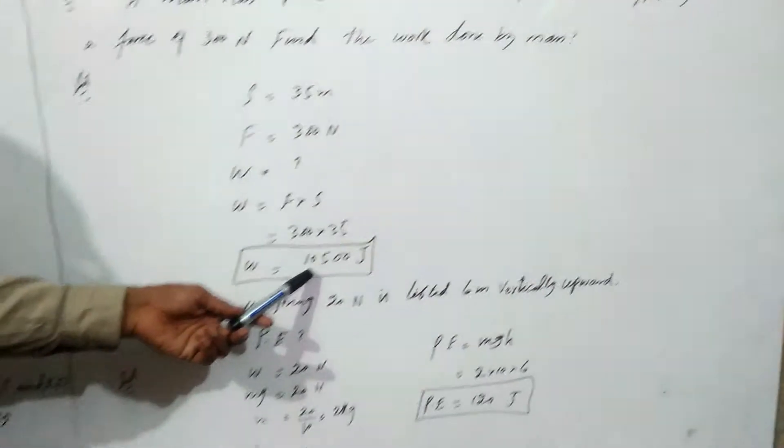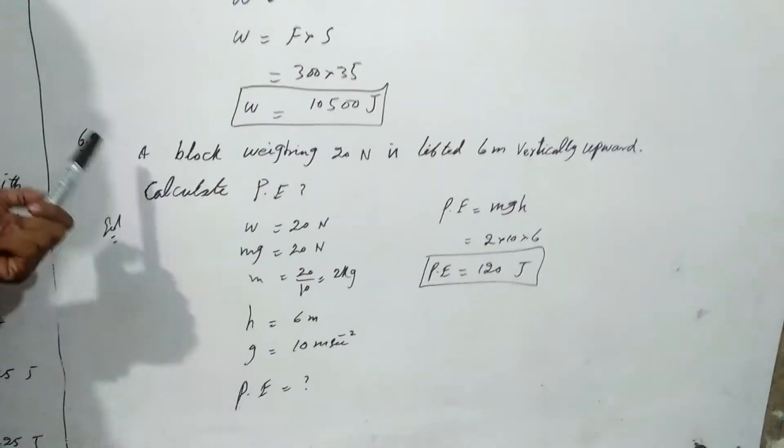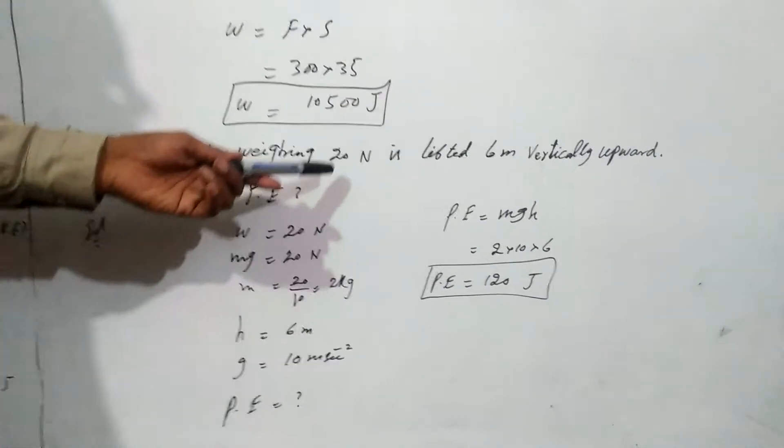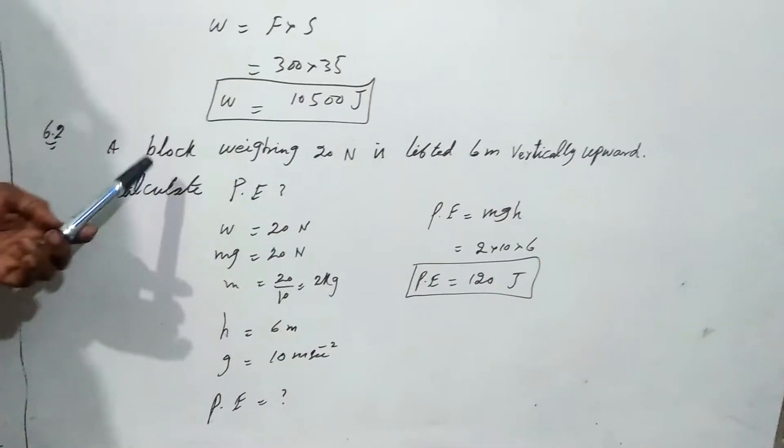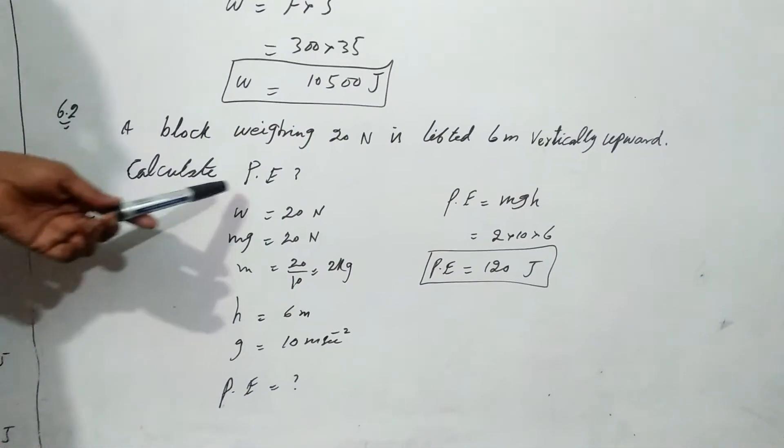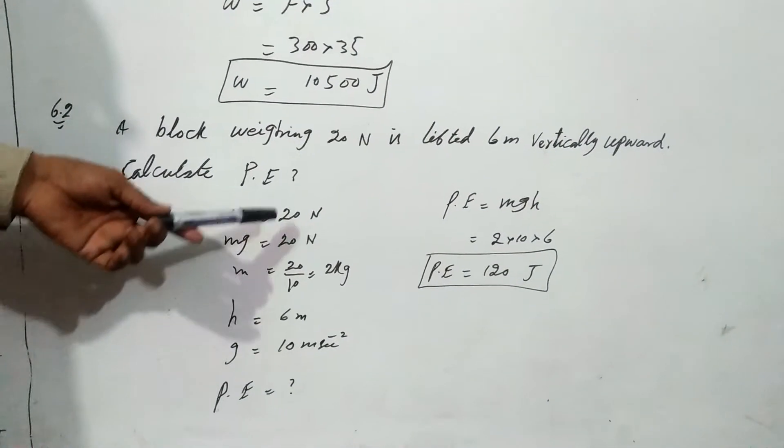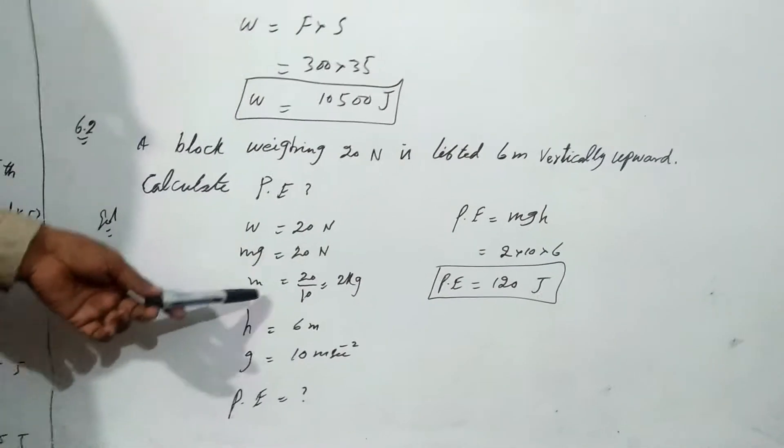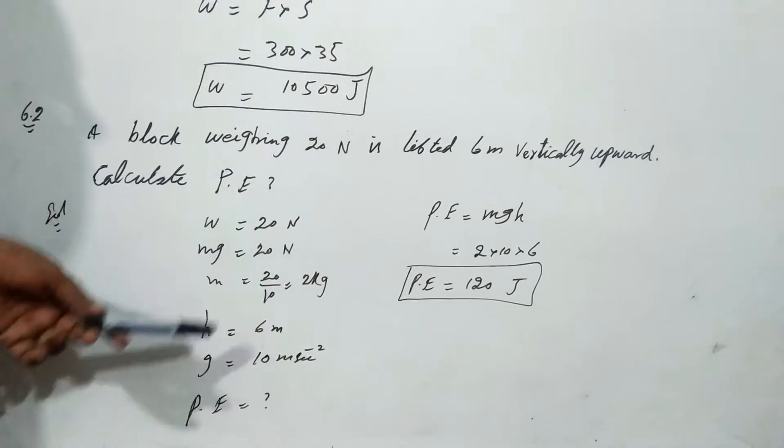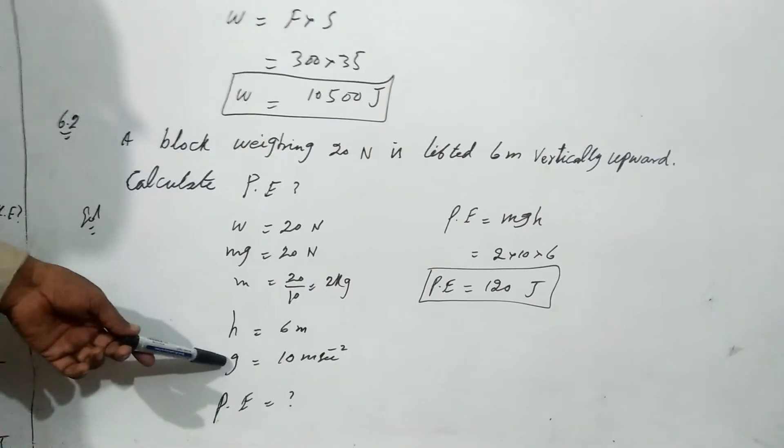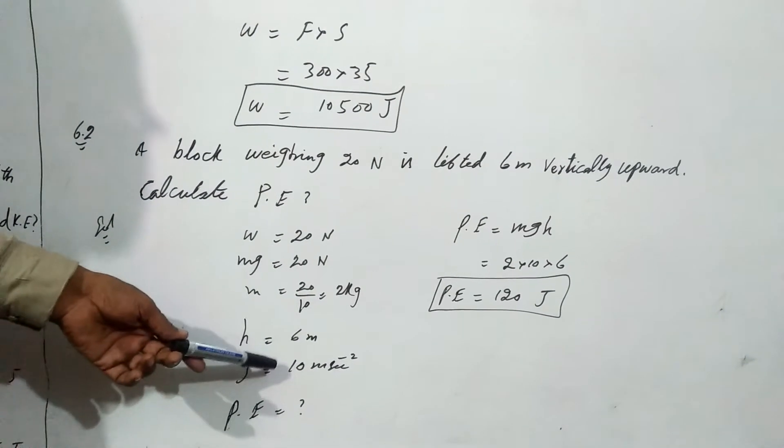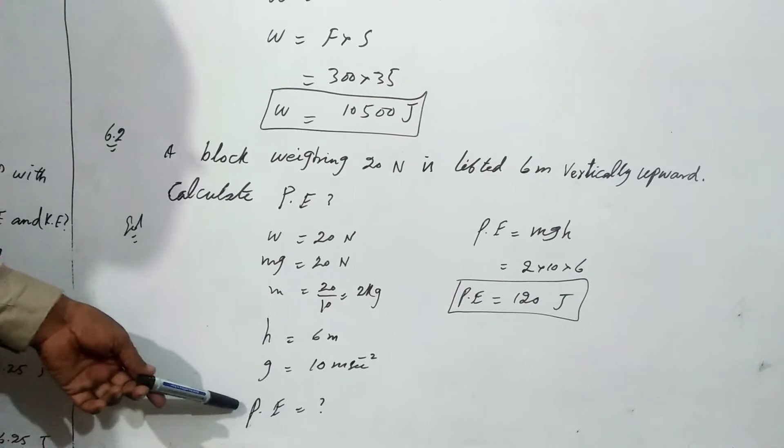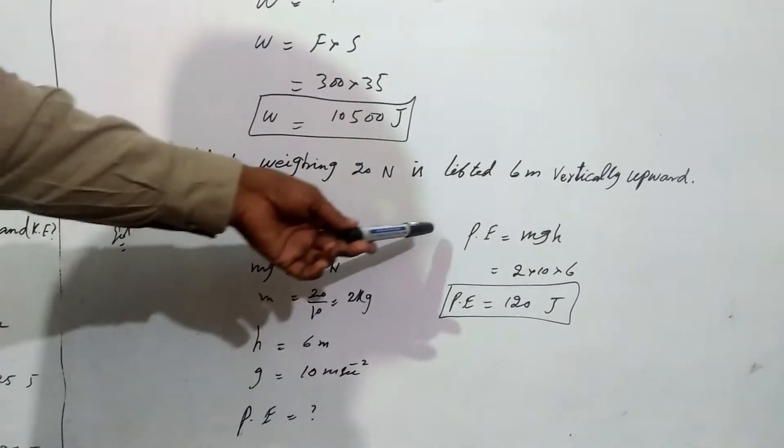In numerical 6.2, a block weighing 20 Newtons is lifted 6 meters vertically upward. Calculate potential energy. So w equals 20 Newtons, w equals mg equals 20 Newtons, so m equals 20 divided by 10, which is 2 kg. Height is 6 meters and g is constant value, gravitational acceleration, which is equal to 10 meters per second squared. So we have to find potential energy. Potential energy equals mgh. Finally, we get potential energy 120 joules.